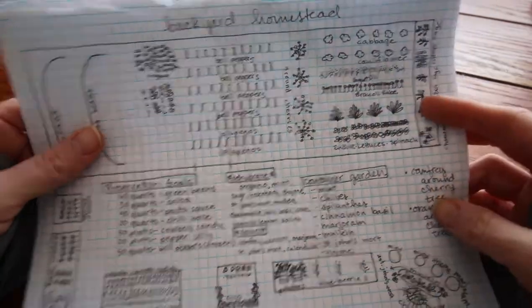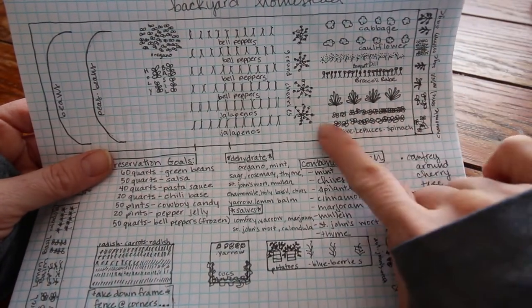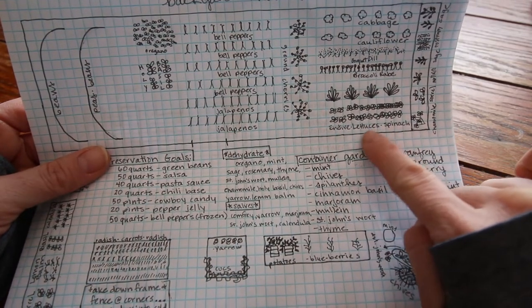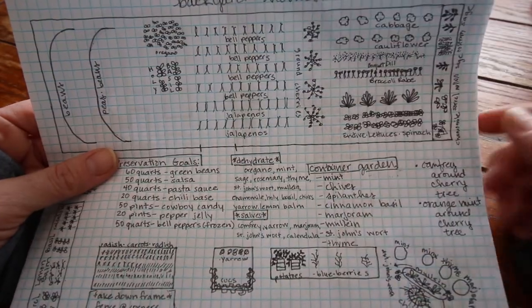This is kale so we're gonna do a few plants of those and then this is gonna be a mix. It's gonna be our lettuce patch with endive, a couple different lettuces and spinach, all right in here where the green beans were last year.